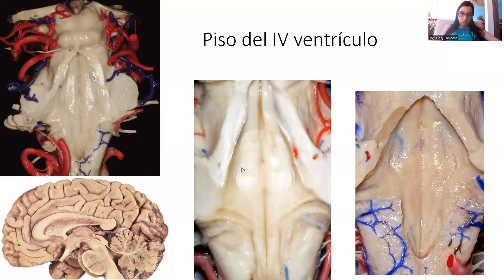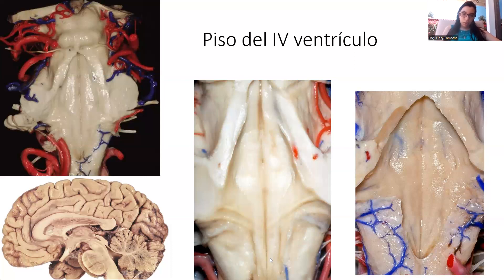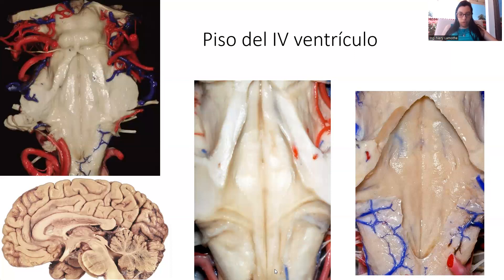The medial eminence has the facial colliculus of the facial nerve. This facial colliculus is above the abducent nucleus. The medial eminence also has something called the calamus scriptorius, which includes the hypoglossal triangle, located above the hypoglossal nucleus. It is medial to the inferior fovea. Caudal to the inferior fovea and lateral to the hypoglossal triangle is the vagus triangle, which is above the dorsal vagus nucleus.